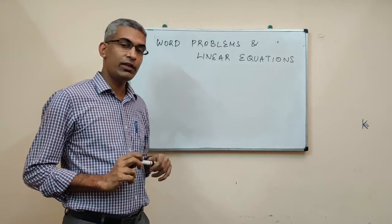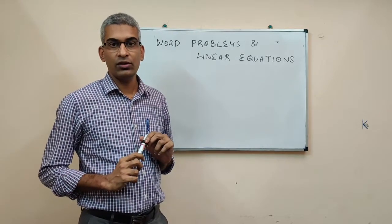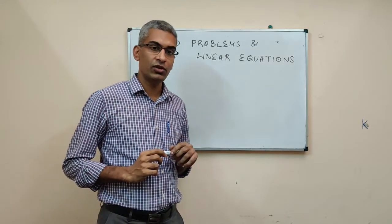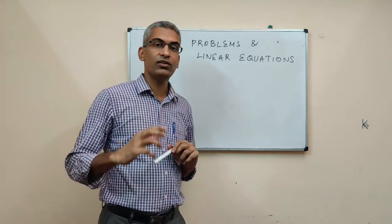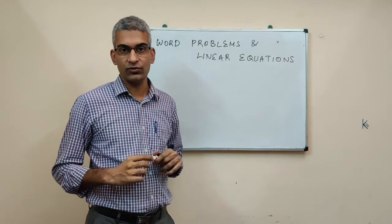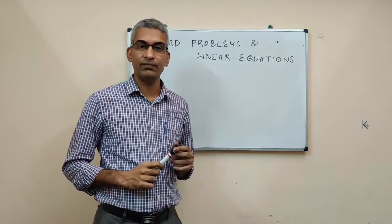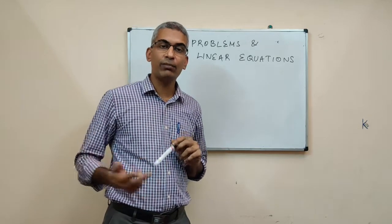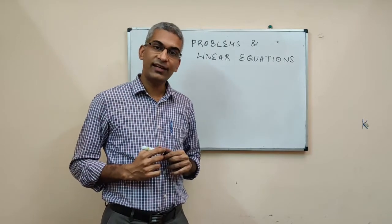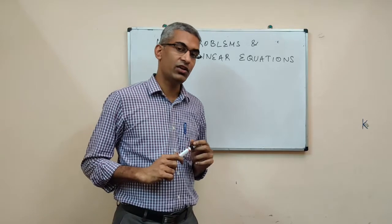To understand this, let me give you an example. Let us say I went to my sister's house with a box of chocolates. The box contained 100 chocolates in it. I gave the box to my niece — that is my sister's daughter. On the first day she ate some chocolates from this box. On the second day she ate twice the number of chocolates she ate on the first day. On the third day she ate thrice the number of chocolates she ate on the second day. After three days she has ten chocolates remaining in the box. The question is: how many chocolates did she eat on the second day?